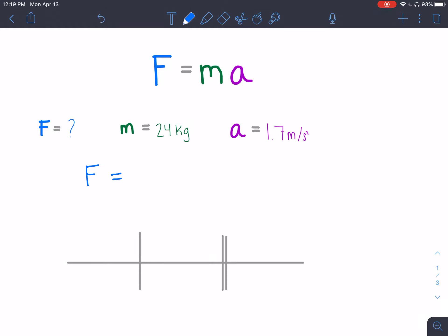It would be force is equal to the mass in kilograms times the acceleration in meters per second squared. Just multiply those two together and you will get 40.8 Newtons.